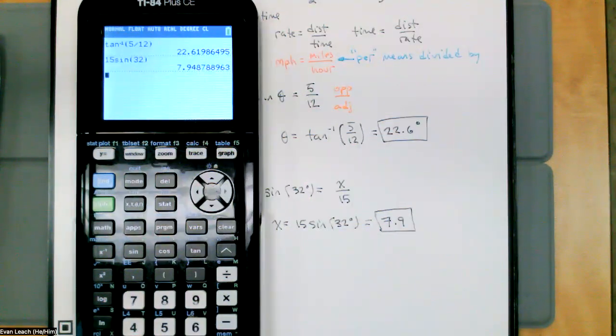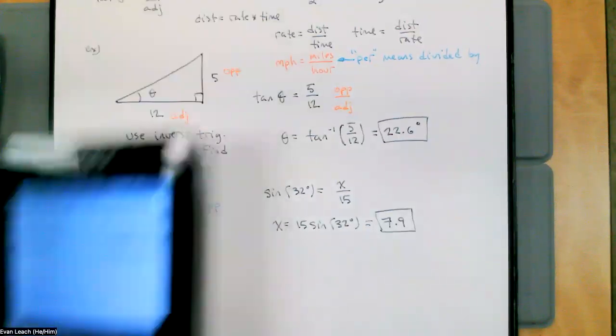Inverse sine would be for finding an angle. We wouldn't want to use an inverse sine because that's what we would use if we were looking for an angle, but the angle that we're looking at using is 32 degrees. We've already got an angle so we're not going to use inverse sine. Only use inverse trig functions when you're looking for an angle.